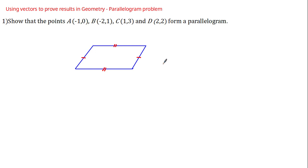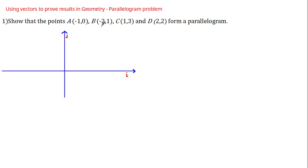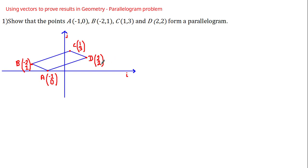Given our understanding of the geometric properties of a parallelogram, we can use vector methods to solve this problem. We can map out these coordinates on an i-j vector axis using column vectors, and if we join the points together we have something that looks like a parallelogram. What we need to show is that each pair of opposite sides are both parallel and equal in length.